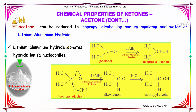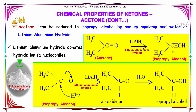Acetone can also be reduced to isopropyl alcohol by sodium amalgam and water, or even by lithium aluminum hydride (LiAlH4). Lithium aluminum hydride donates a hydride ion (H−) as a nucleophile, which attacks the C=O double bond. Thus, we get 2 moles of hydrogen added, giving CHOH as a product — isopropyl alcohol.